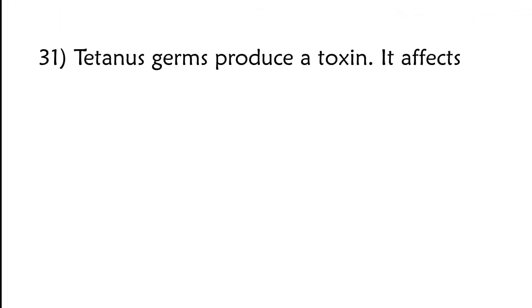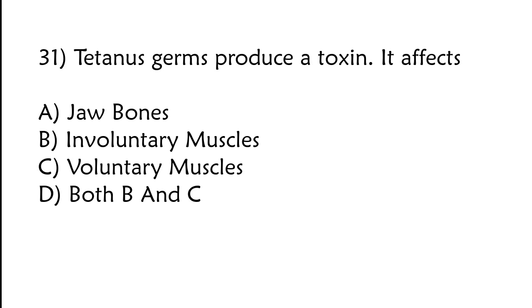Tetanus germs produce a toxin. It affects jaw bones, involuntary muscles, voluntary muscles, or both B and C. The correct answer is option C, voluntary muscles.